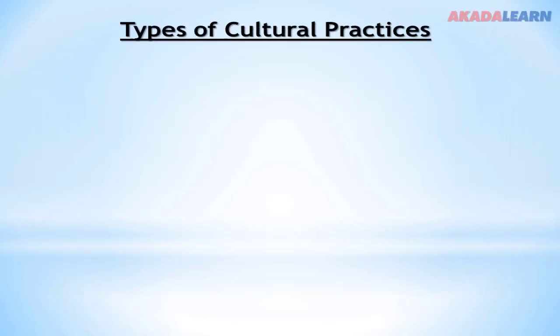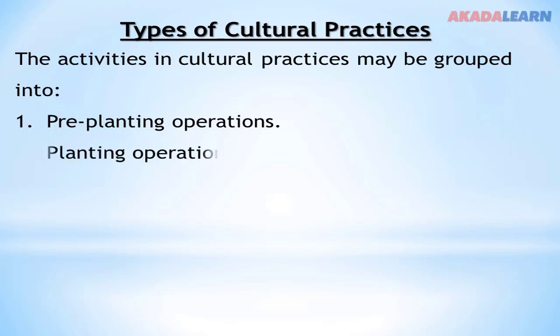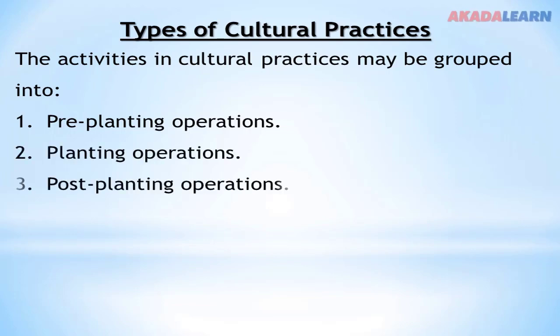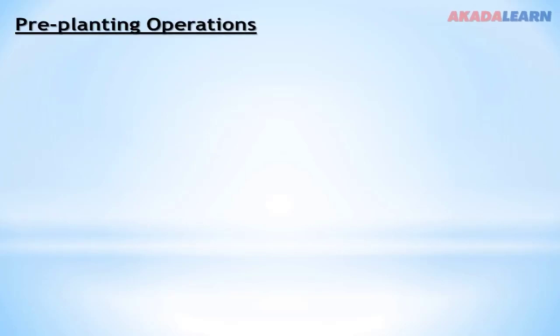Types of cultural practices. Cultural practices are categorized into the following: we have pre-planting operations, planting operations, post-planting operations, harvesting operations, and post-harvesting operations. Let's start with pre-planting operations. Pre-planting operations are the operations or activities carried out on the farm before planting is done.